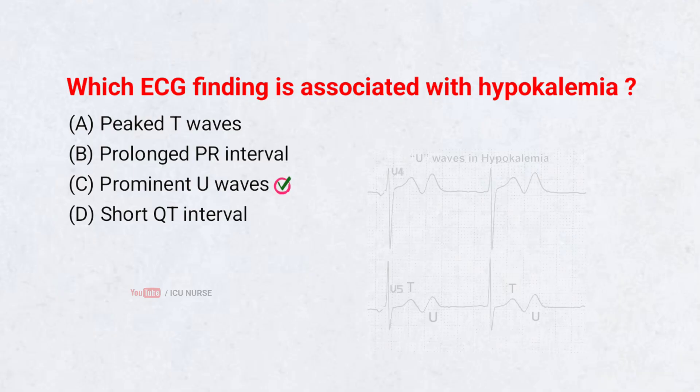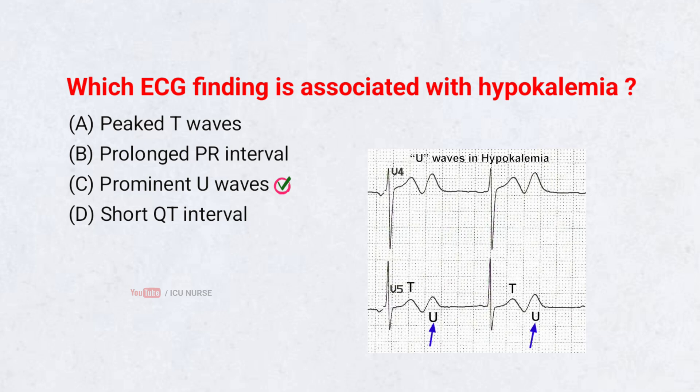Hypokalemia delays repolarization and produces visible U-waves following the T-wave. These U-waves are a classic and early ECG sign used to suspect low potassium levels.